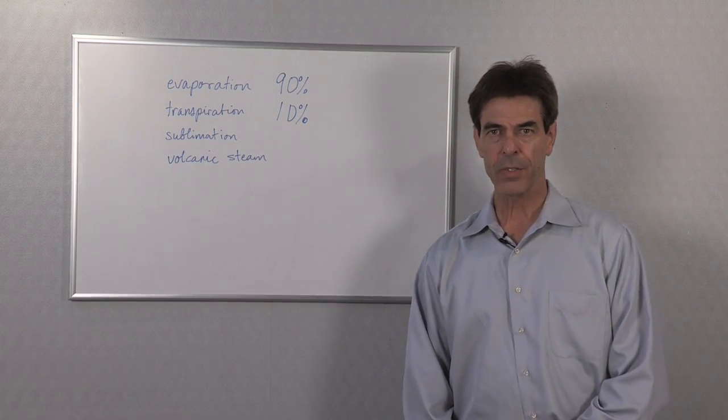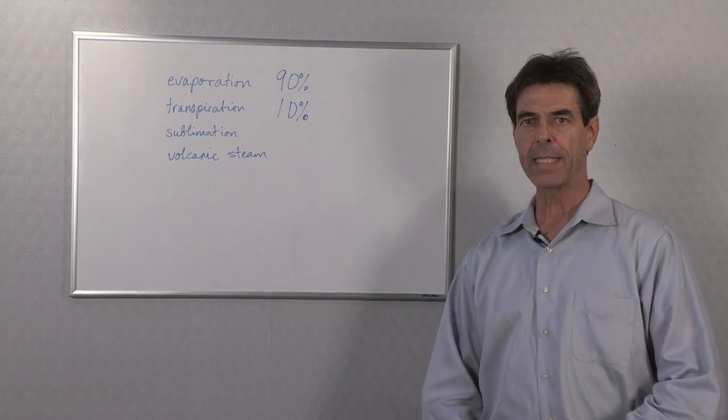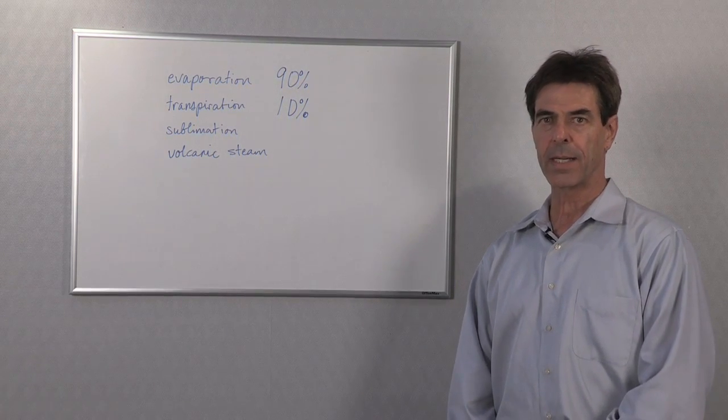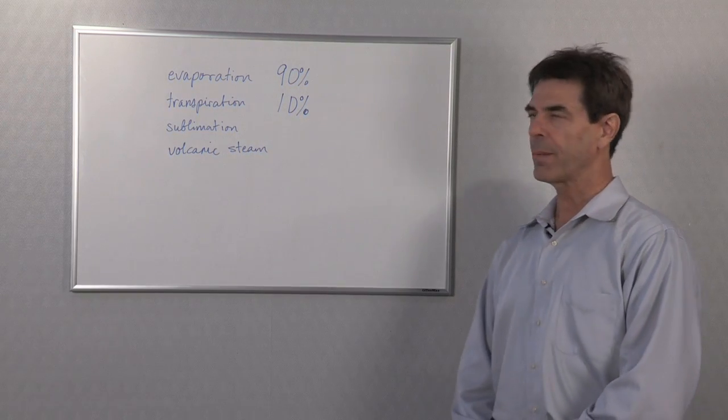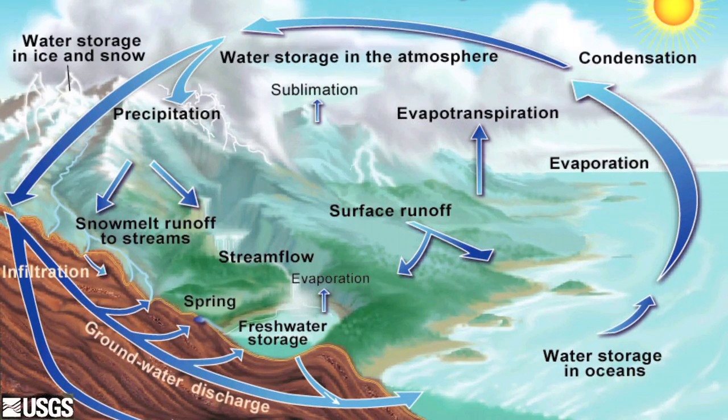The other processes that contribute water to the Earth's atmosphere: sublimation, which is when ice or snow is converted directly into water vapor without going through the process of melting, and steam from volcanoes or from geysers. These are negligible sources of water.